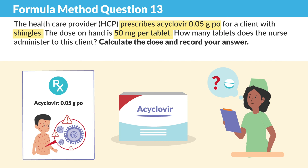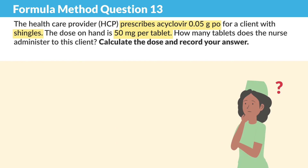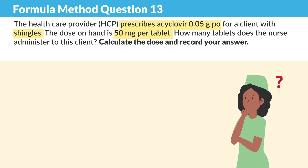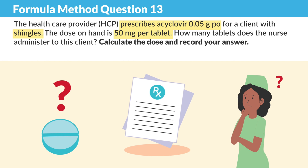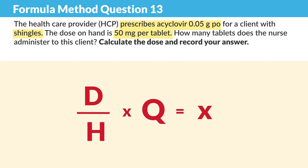Now this one is a little bit tricky, so let's break it down. The question is asking tablets per dose, and we're going to be using the formula method as usual. So let's set it up: D over H times Q — Drinks are on the house times the quantity.